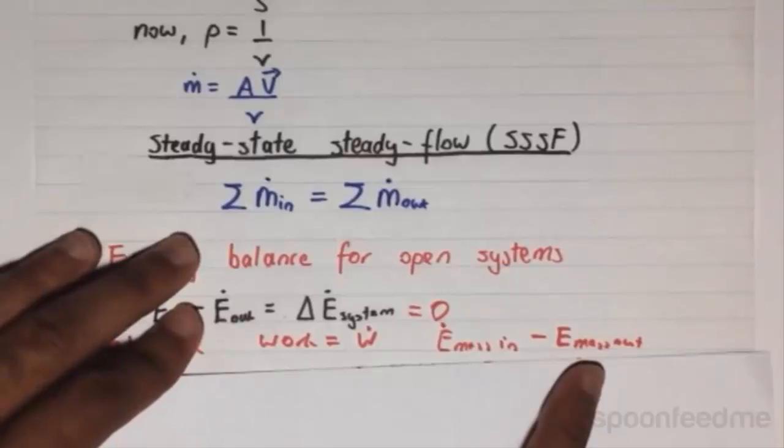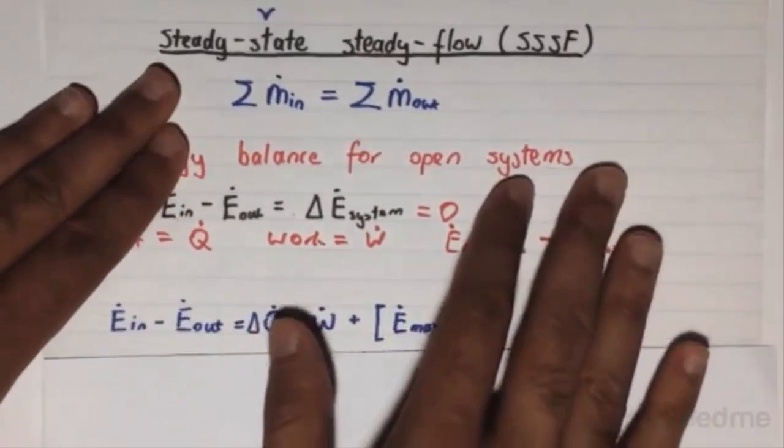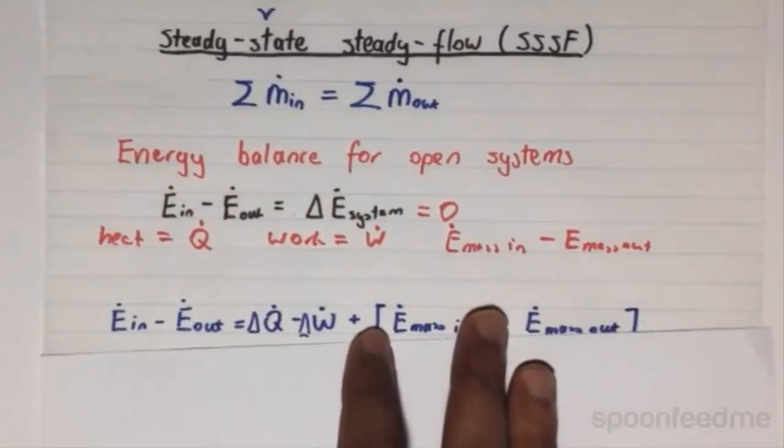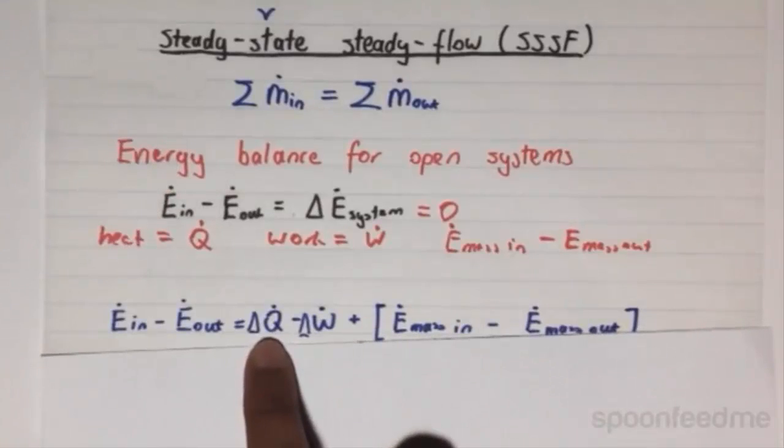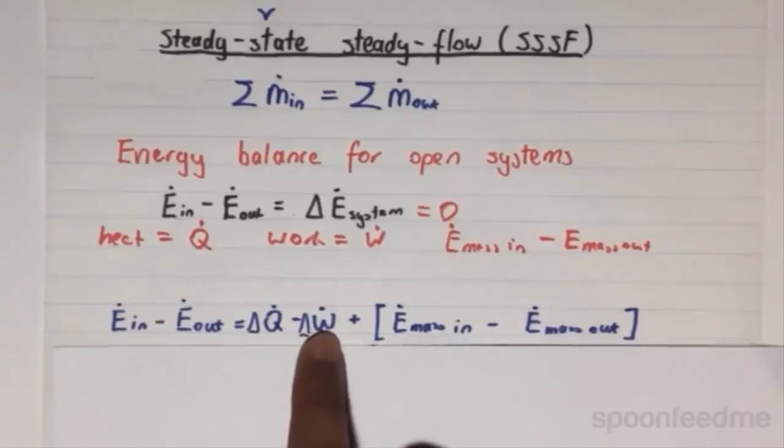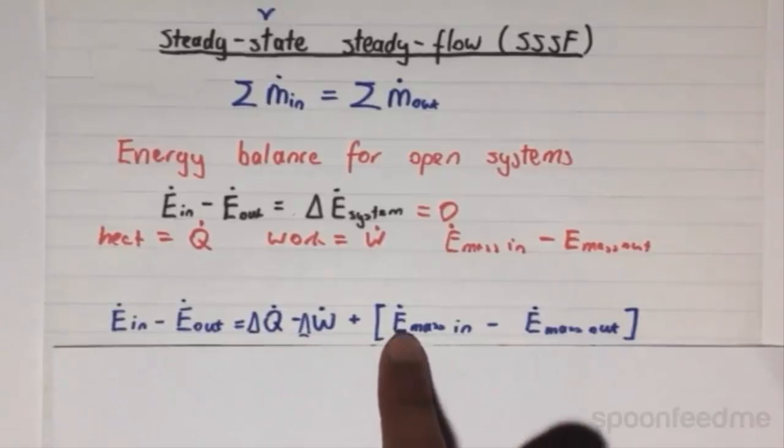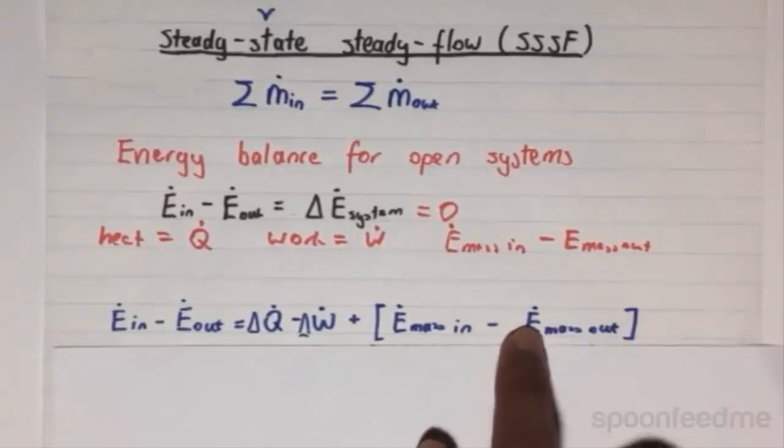If we combine the three to determine an equation for the change in flow rate of the energy, it will be the change in Q̇ minus the change in Ẇ plus the change in the mass flow rate energy.